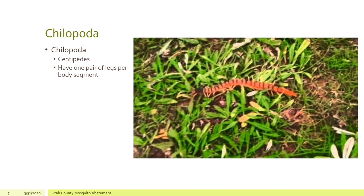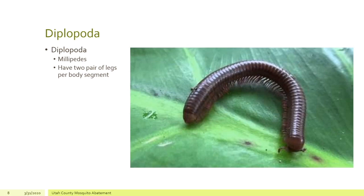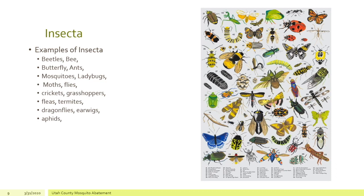Another group we want to talk about are the chilopods. Chilopods are your centipedes. If we watch this little centipede walking through, you'll notice that it has one pair of legs per body segment. The next group is the diplopods. Diplopods are millipedes, and they have two pairs of legs per body segment.